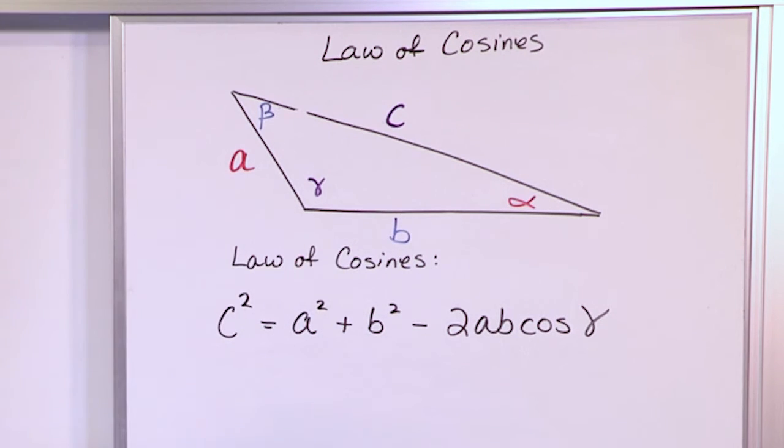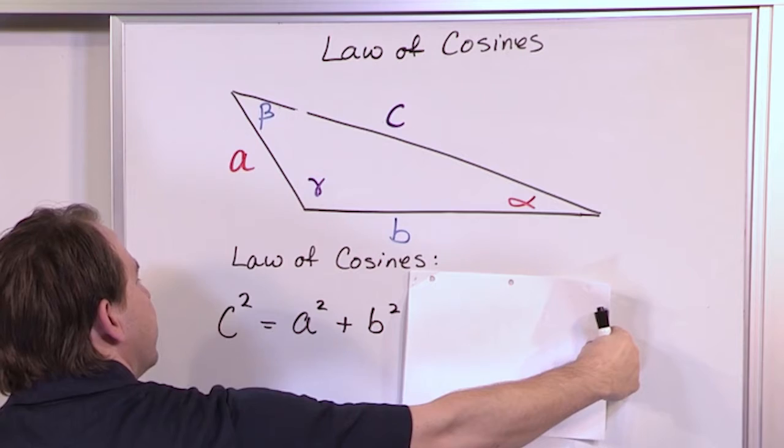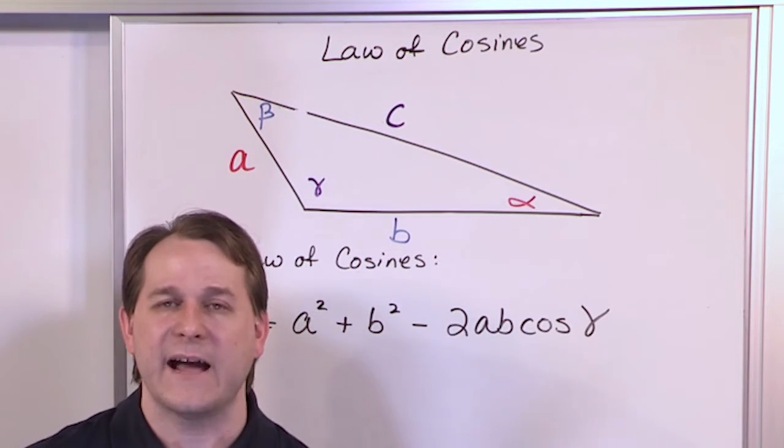Now let me ask you a question before I say anything else. If I cover up this, does this look familiar? C squared is equal to A squared plus B squared. It should look familiar because that's the Pythagorean theorem.